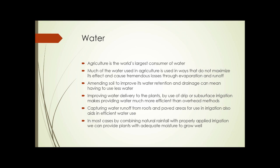Improving water delivery to plants by the use of drip or subsurface irrigation makes providing water much more efficient than overhead methods. Capturing water runoff from roofs and paved areas for use in irrigation also aids in efficient water use. In most cases, by combining natural rainfall with properly applied irrigation, we can provide plants with adequate moisture to grow well.